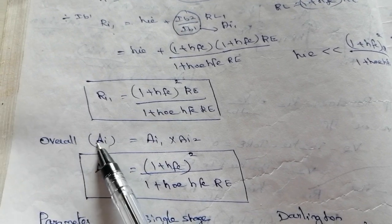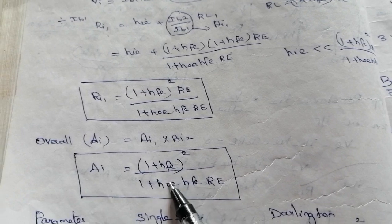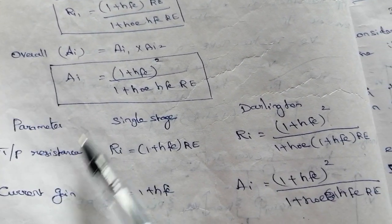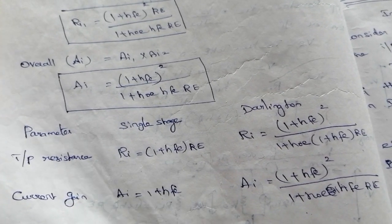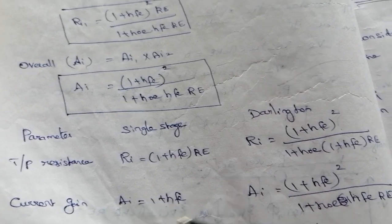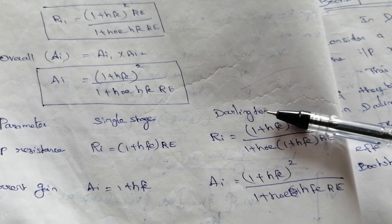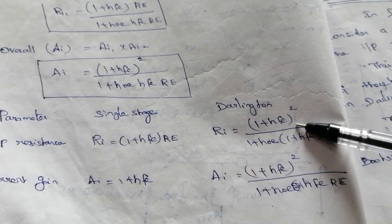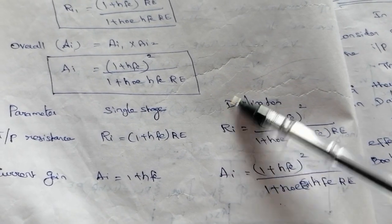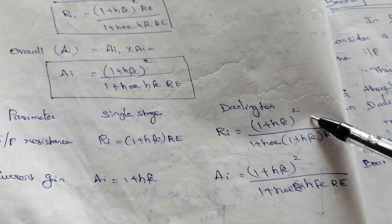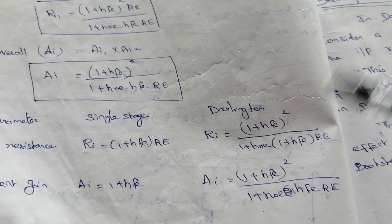The overall input resistance and overall current gain AI equals stage 1 current gain multiplied by stage 2 current gain. The input resistance for a single stage was already derived in unit 1 for a single stage common collector amplifier. For the Darlington connection of two common collector amplifiers, the RI value is much higher because it appears as a squared term. For example, if a single stage gives 500 kilo ohm, the Darlington configuration gives 500 squared kilo ohm, which is very high.